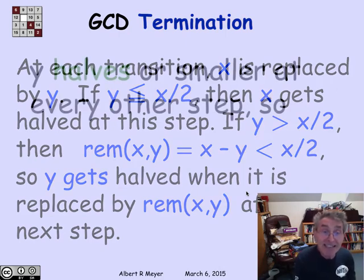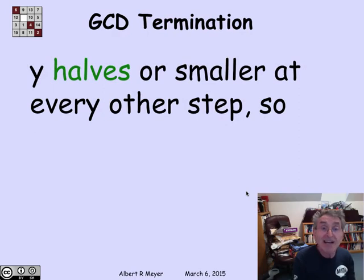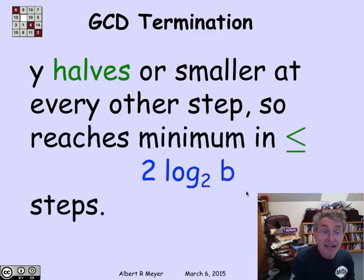The net result is that y gets cut in half, or even smaller, at every other step. Which means that this procedure can't continue for more than twice the log to the base 2 of the original value of y, which is b, number of steps, because that's how many halves you can do before you start hitting 0.